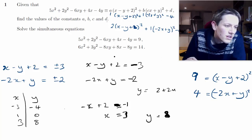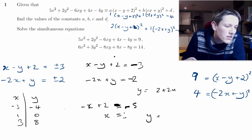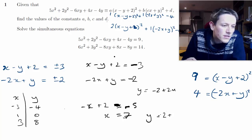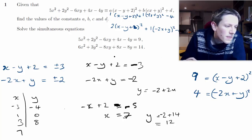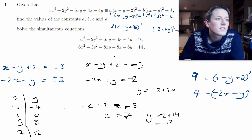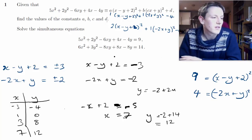Finally for x − y + 2 = −3 and −2x + y = −2: adding gives −x − 1 = −5, so −x = −7, x = 7. Then y = −2 + 14 = 12. So I get four possible solutions: (−3, −4), (1, 0), (3, 8), and (7, 12).